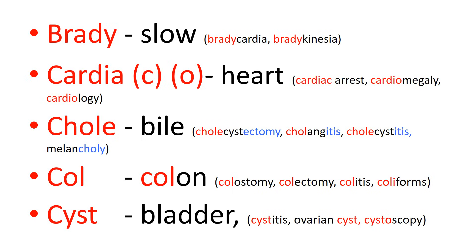In this series I've put the prefix in red, the suffix in blue, and the root of the word in black. So here we have cholecystectomy: 'chole' is bile, 'cyst' is a fluid-filled space relating to the bladder, so the cholecyst is the gallbladder, and 'ectomy' is surgical removal of. So cholecystectomy means surgical removal of the gallbladder.